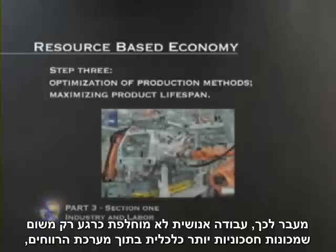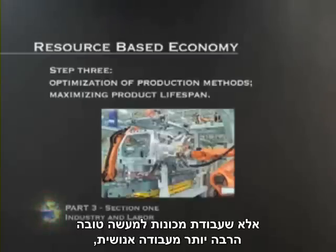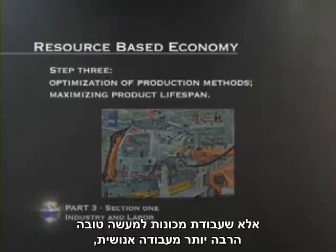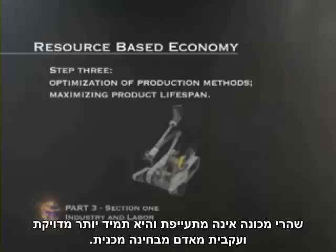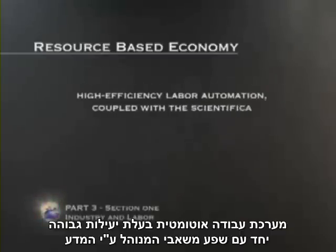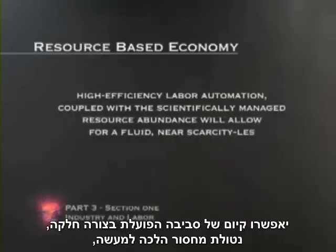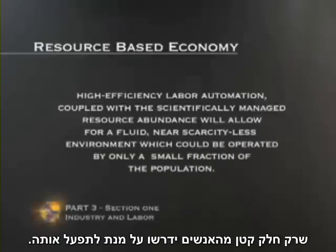Furthermore, human labor is not only currently being replaced by machines because it is more cost-effective in the profit system — machine labor is actually much better than human labor, and output statistics have shown this continually. This should be of no surprise, for a machine does not get tired and it is always more accurate and consistent than a human mechanically. High-efficiency labor automation coupled with scientifically managed resource abundance will allow for a fluid, near-scarcity-less environment which could be operated by only a small fraction of the population.